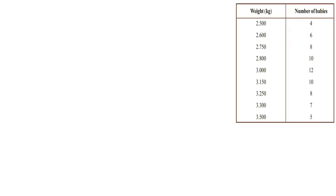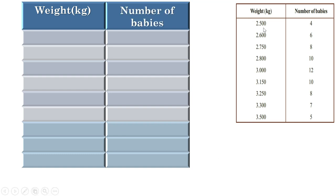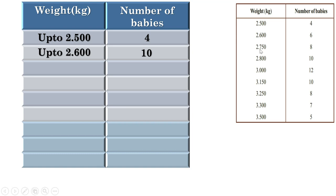Let us prepare a frequency table first. The headings can be weight and number of babies. Weight up to 2.5 kilograms: there are 4 babies. Weight up to 2.6 kilograms: there are 4 plus 6, or 10 babies. Weight up to 2.75 kilograms: there are 10 plus 8, or 18 babies.